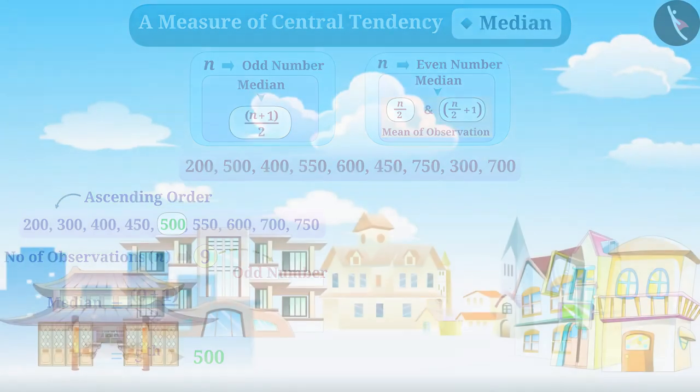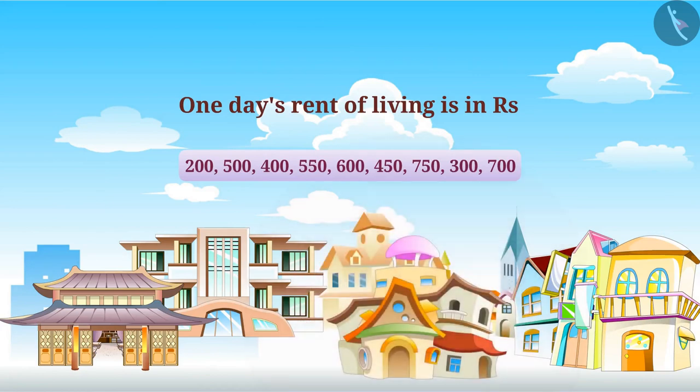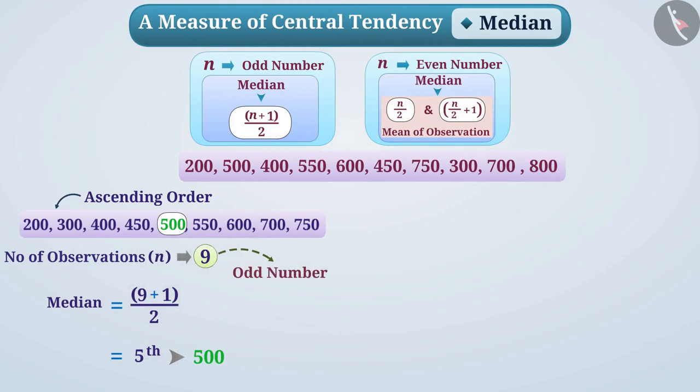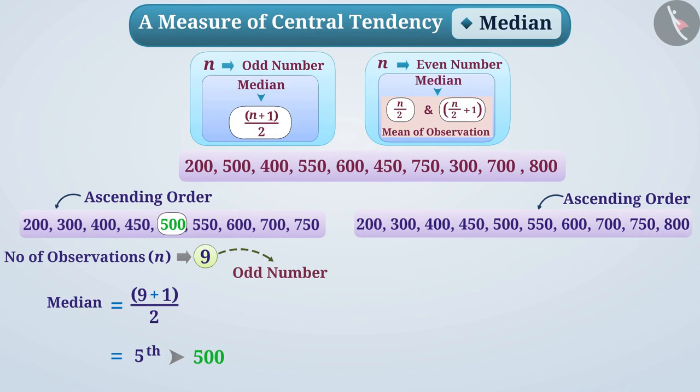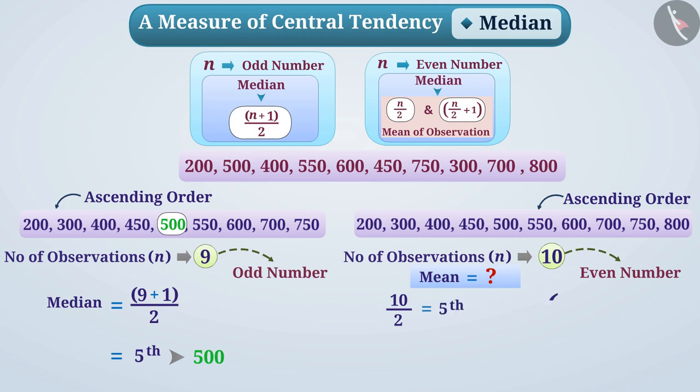Suppose a new hotel started in the same city whose one day's stay is 800 rupees. Now, we can arrange all numbers in ascending order in this way. In this case, the number of observations will be 10, which is an even number. In this case, we get mean of 10 divided by 2, that is 5th, and 10 divided by 2 plus 1, that is 6th observation, which will be 525.